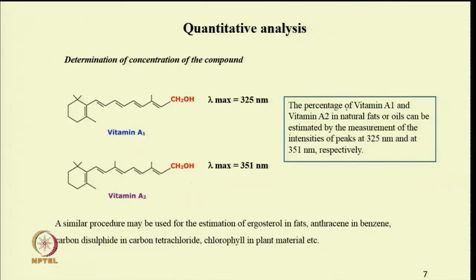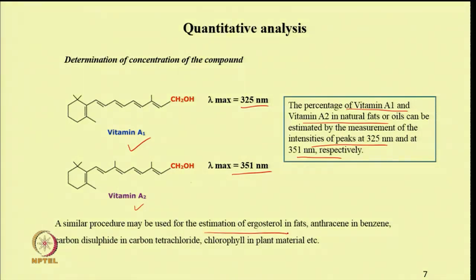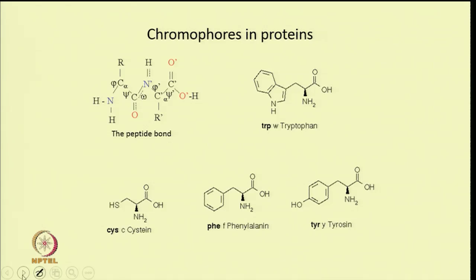We can also calculate the percentage of vitamin A1 and vitamin A2 in natural fats or oils by measuring the intensities of peaks at 325 nm and 351 nm. Vitamin A1 absorbs at 325 nm whereas vitamin A2 absorbs at 351 nm. A similar process can be used for estimation of ergosterol in fats, anthracene in benzene, carbon disulfide in carbon tetrachloride, and chlorophyll in plant materials.